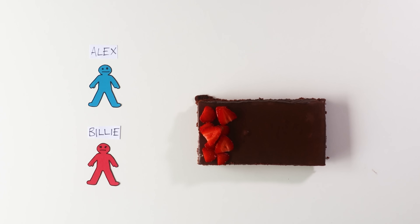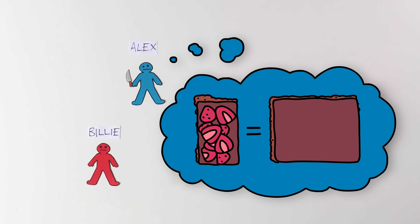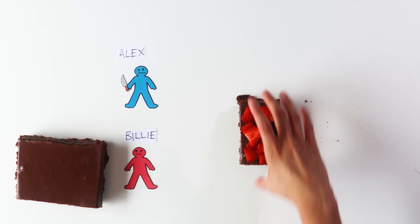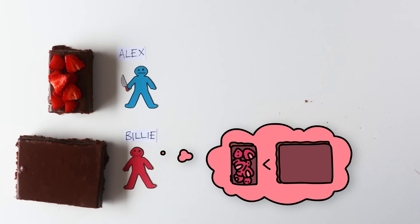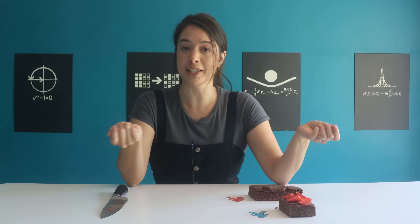Alex and Billy want to share a cake fairly. We make Alex the cutter, and his job is to cut the cake into what he thinks are two equally valuable pieces. Alex really likes strawberries and cuts accordingly — to him, these two pieces are equal in value. We're not talking about literal sizes, but how the players value them. Now Billy chooses the piece she likes best. Billy likes chocolate frosting, so she takes that piece. Alex gets the remaining piece. Billy is happy because she thinks she got the best piece, and Alex is happy because he thinks he got a piece equal in value to Billy's. The cut and choose algorithm will always work no matter who cuts first or how the players value the pieces.